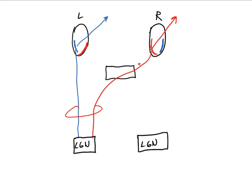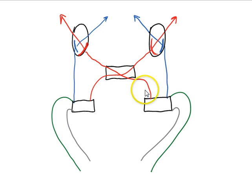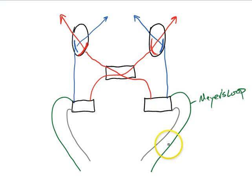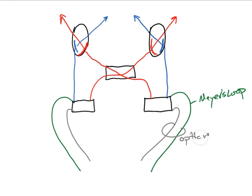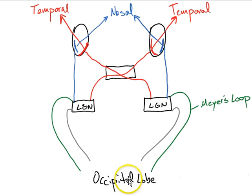Notice that the nasal fibers on both sides are the only ones that ever cross. Temporal fibers do not cross. Now, to add a little bit more to this story, we've got to look at this picture. Fibers are coming back to the lateral geniculate nucleus, but now we have something called Meyer's loop and the optic radiations. This right here in green is Meyer's loop — notice that it is out in front of the other fibers. The whole thing here is called the optic radiations, and as we will see, those progress to the occipital lobe.